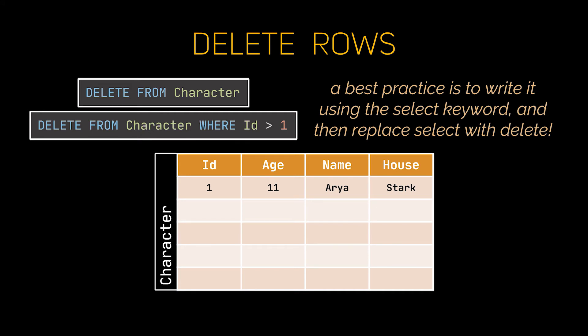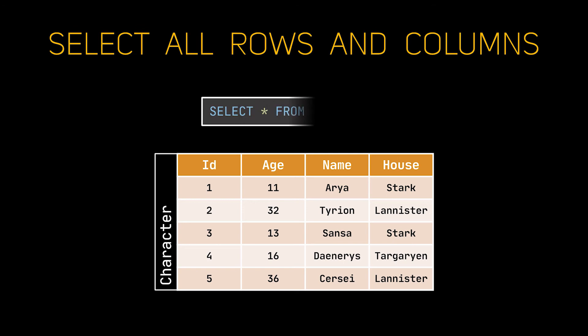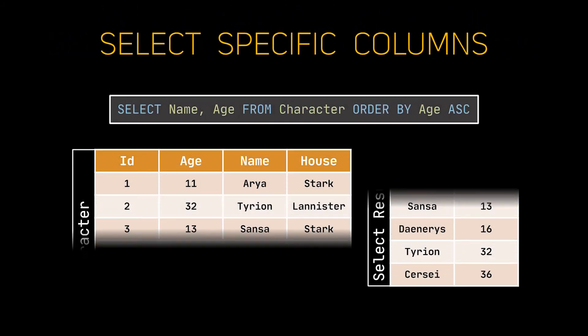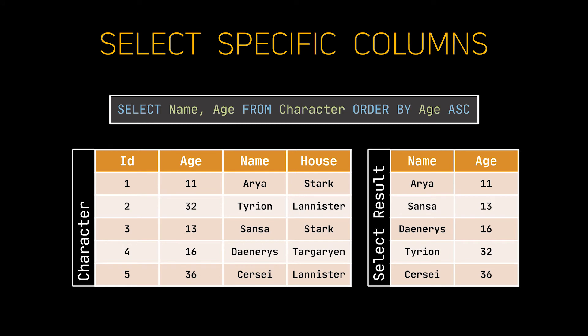Speaking of SELECT, this one will take the remaining time of our video, as it has a lot of customizations that we will be covering. Let's consider that our table contains the following records. The simplest use of SELECT is retrieving all these rows, and it is written as follows. An asterisk in SQL means everything, or all. We can retrieve specific columns from the table if we don't need all of them, by specifying which columns we actually need. We can also order these columns by adding at the end of the statement the ORDER BY keyword. The ORDER BY keyword can be followed with ASC for ascending, or DESC for descending, to choose in which order we would like to arrange our records.